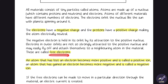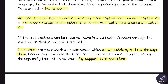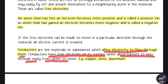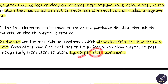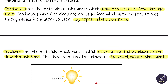This flow of free electrons is what generates electricity. Conductors are materials which allow electricity to flow through them — they have free electrons on their surface which allow current to pass easily from atom to atom. Copper, silver, and aluminum are examples of conductors. We generally use copper. Silver is more conductive but quite expensive, so we stick with copper.